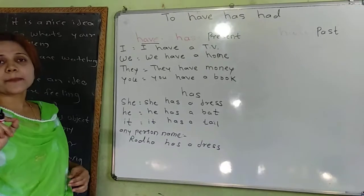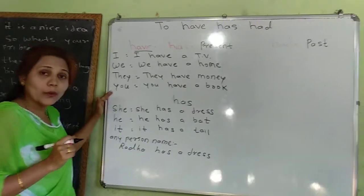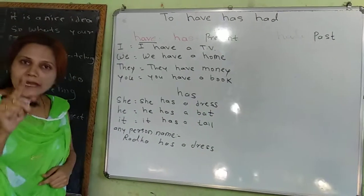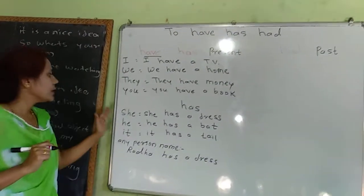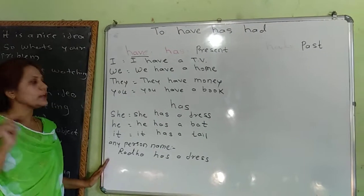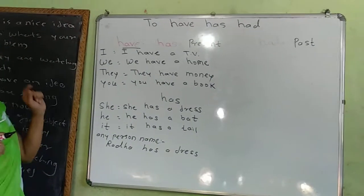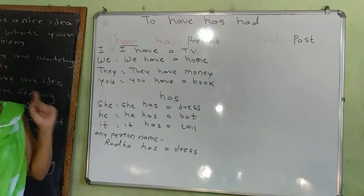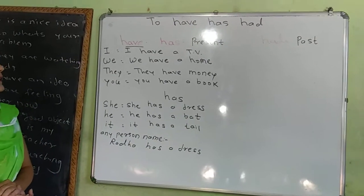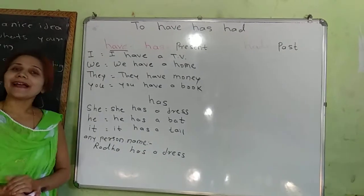So when the subject is I, we, they, or you, that time we use have. And when the subject is she, he, it, or any person's name, that time we use has. Have and has are used in the present tense. I think you very well understand the difference between have and has.